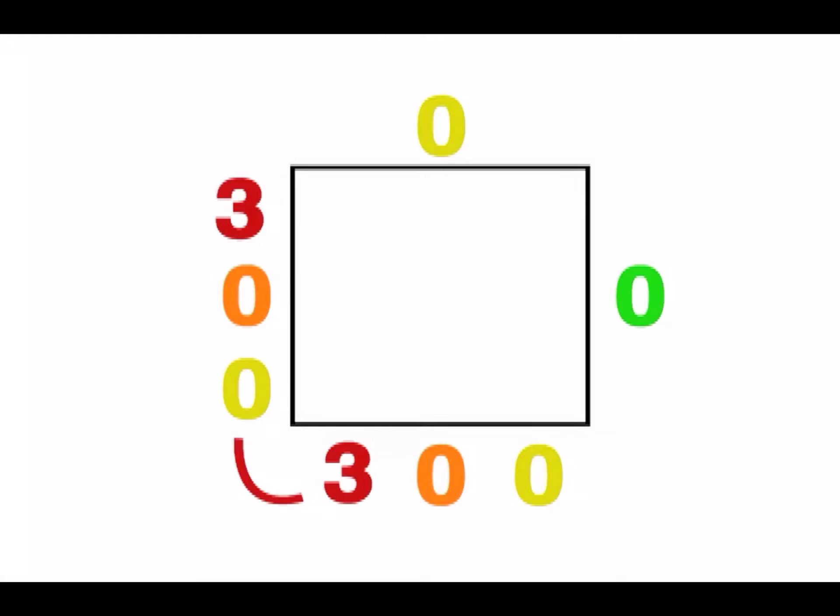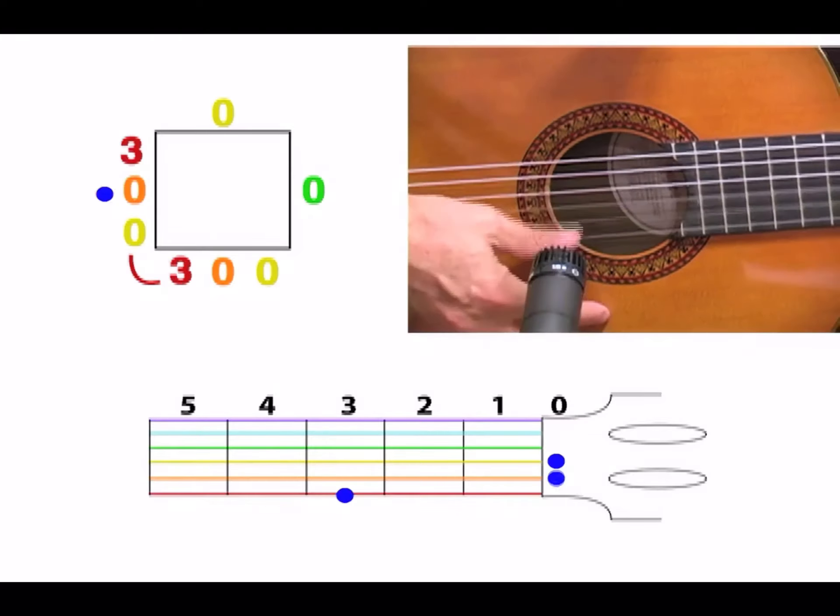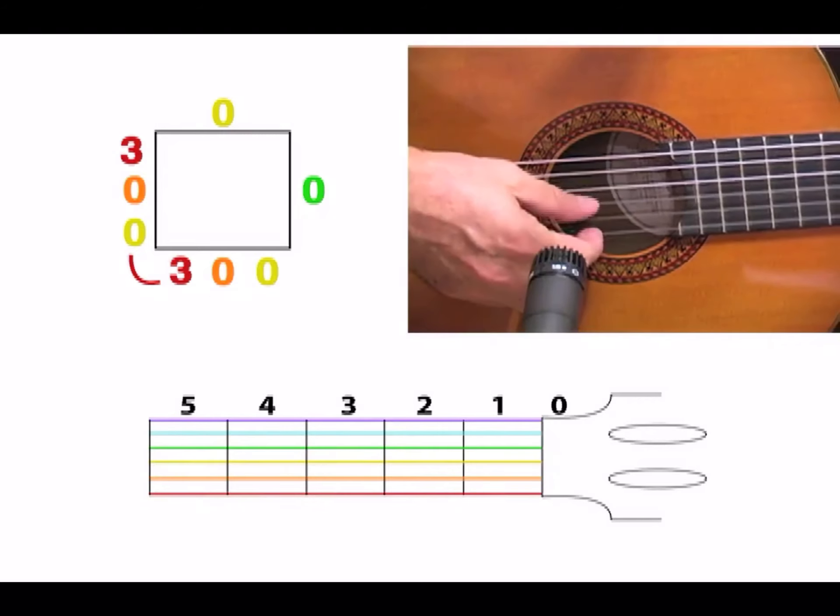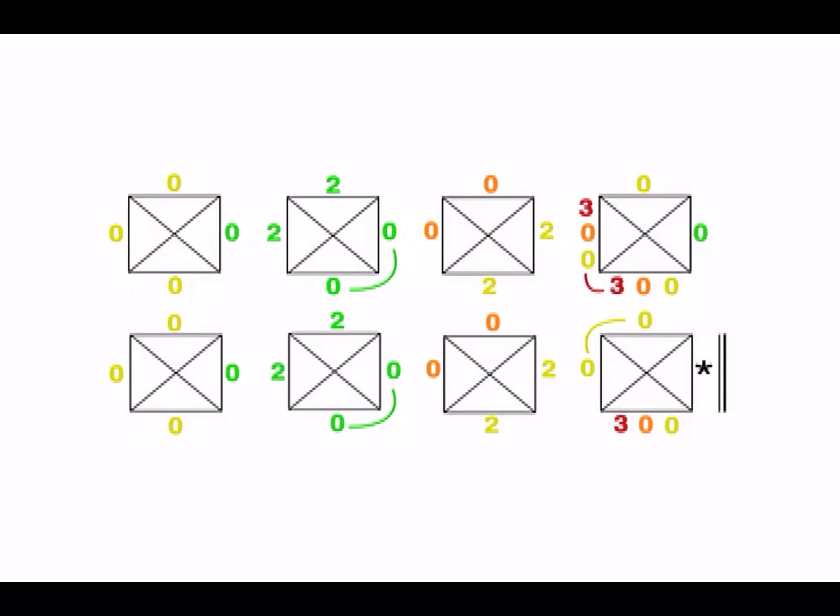On the fourth measure, on beats two and three, we play three notes at the same time. Let's see an example. Now, let's try playing all eight measures of this song's melody.